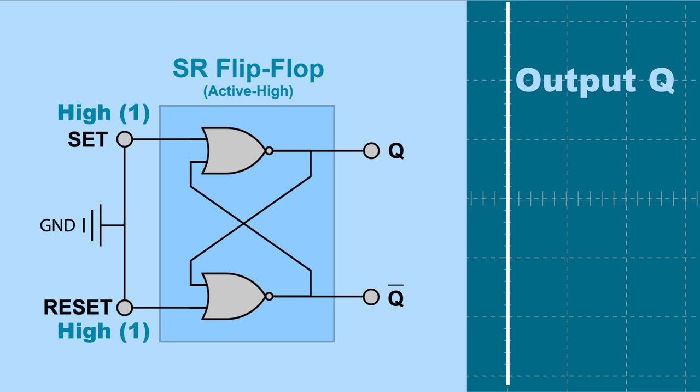The reset input must be active, going high, for the latch to be reset, returning output Q to low, its normal state. So an active set input sets the latch, with output Q going high. An output Q will not change until the reset input is active, resetting the output back to its normal low. If set and reset are simultaneously active, going high at the same time, an invalid state is triggered. But I'll get into that more a little later. Just know that it's bad.